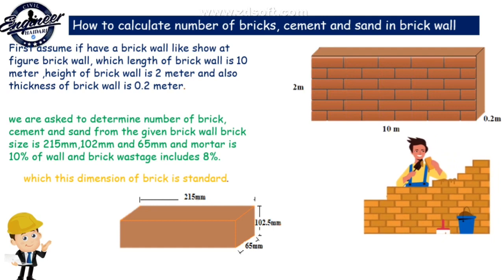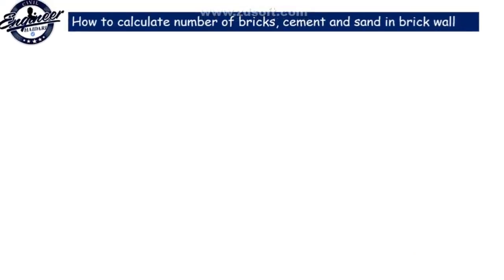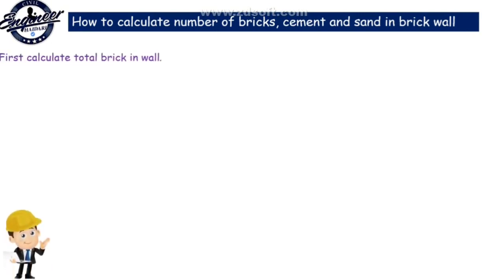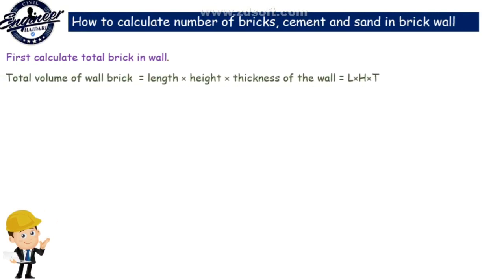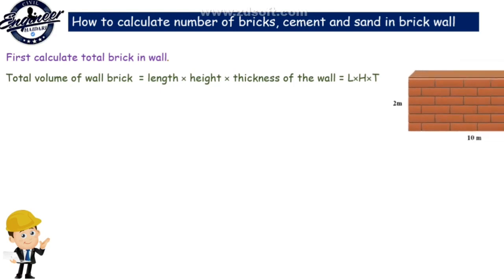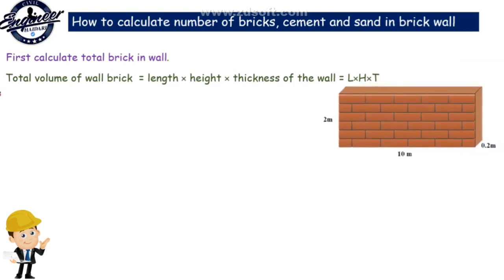The brick is standard. First, calculate total bricks in wall. Total volume of wall equals length multiplied by height multiplied by thickness of the wall. Total volume of brick and mortar equals 10 multiply 2 multiply 0.2 equals 4 cubic meter.